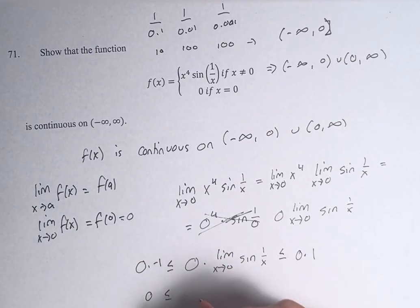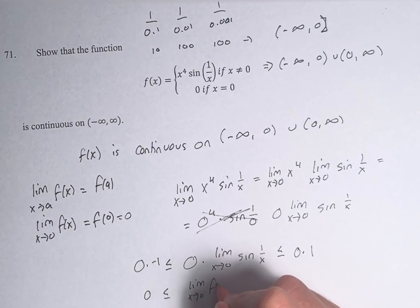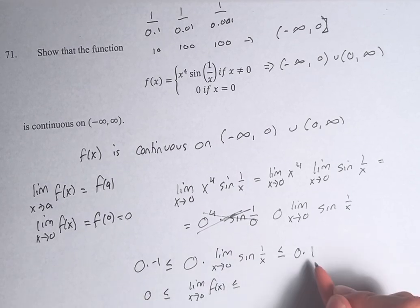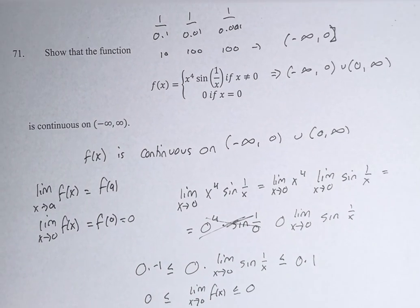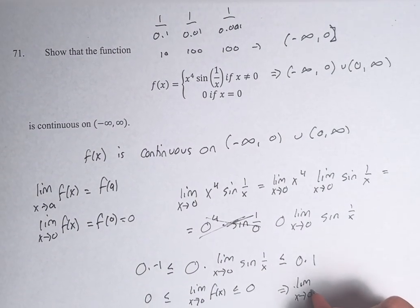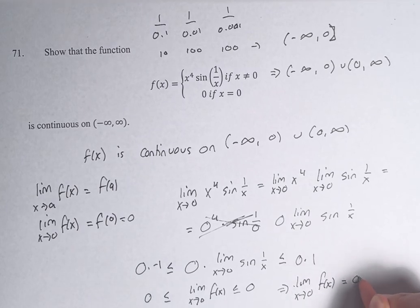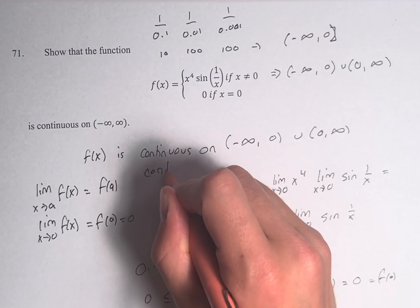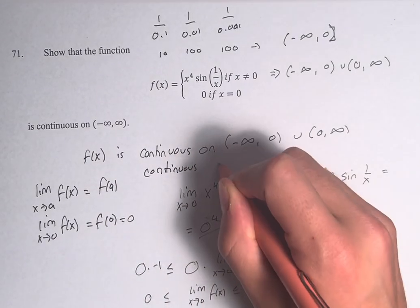We're just going to rewrite this as the limit as x approaches 0 of f(x), since this is what this is originally coming from. It's less than or equal to 0 times 1 is 0. If it's greater than or equal to 0 and less than or equal to 0, that shows that the limit as x approaches 0 of f(x) equals 0, which equals f(0), which means that it's also continuous at 0.